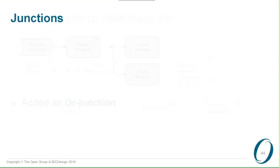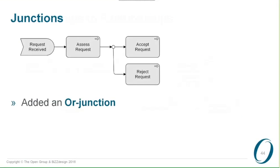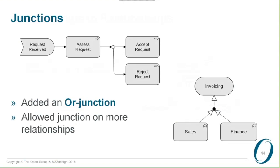We have added another kind of junction: the OR junction. We already had the regular junction — the black dots — and now we have an OR junction as well, to denote a fork in the path of a process. In this example, you can either accept or reject a request. This provides a little more flexibility in modeling business processes. We do not want to duplicate BPMN in any way, so if you really need more detailed gateways, please use BPMN — but this provides a little more detail in process modeling.